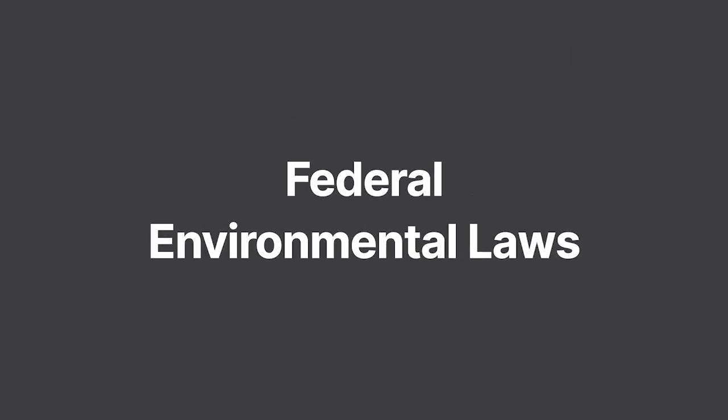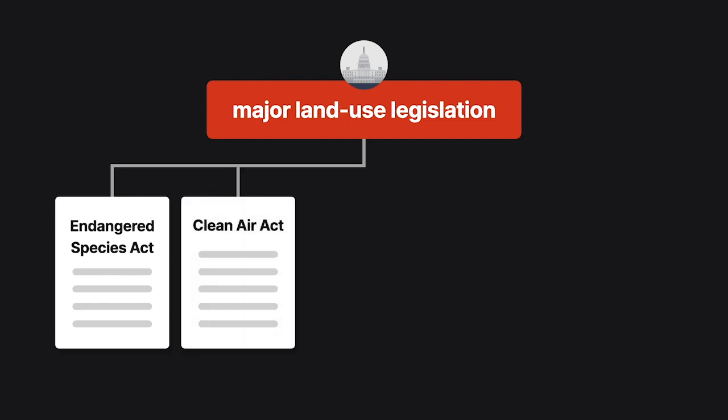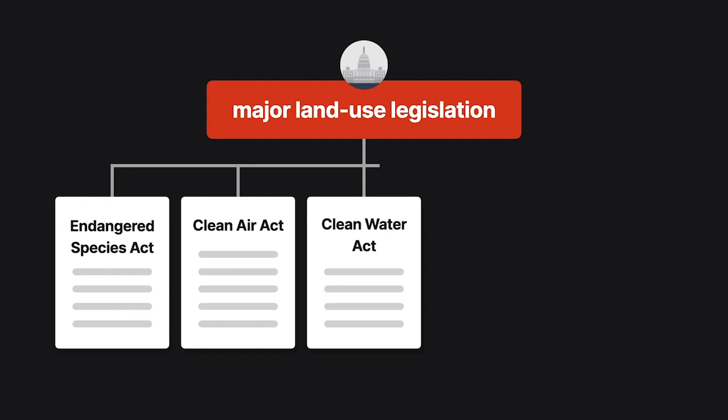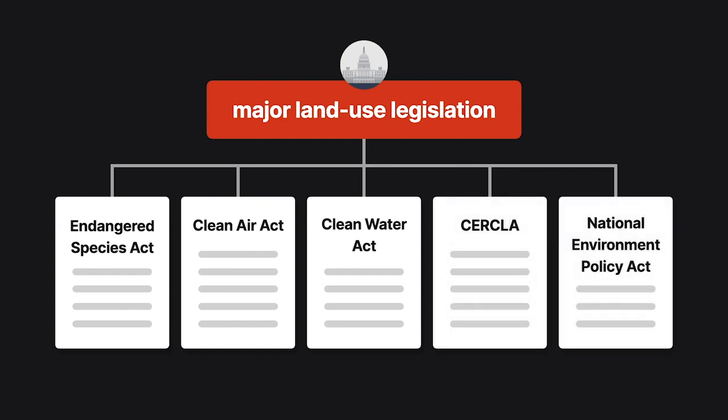The Big Five federal environmental land use laws: one way to familiarize oneself with federal jurisdiction over land use is via an introduction to the major land use legislation enacted by Congress. These are: the Endangered Species Act, the Clean Air Act, the Clean Water Act, the Comprehensive Environmental Response Compensation Liability Act — CERCLA — and the National Environmental Policy Act, known as NEPA.